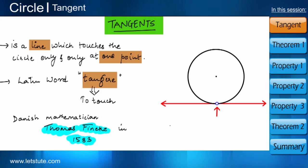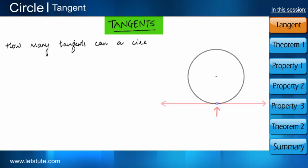The point at which the tangent touches the circle is known as point of contact. So, what do you think? How many tangents can a circle have?